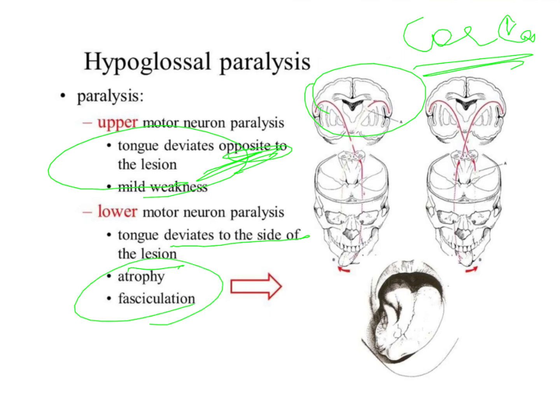In lower motor neuron paralysis — when the paralysis is occurring in the brain stem — if it is on the right side, the entire organ will shift to the right side. Whereas if it is an upper motor neuron lesion and you have a right side paralysis, the entire tongue will shift to the left side. For practical purposes, always remember that it moves to the same side. However, if the question is very specific as to upper motor or lower motor neuron, then you have to select the right answer.